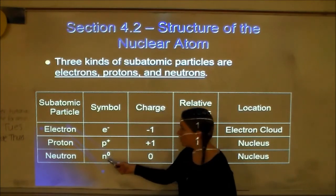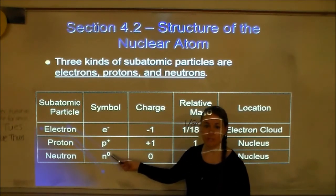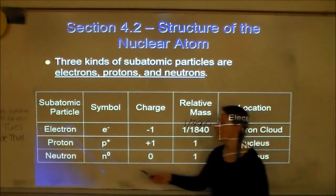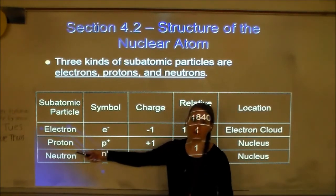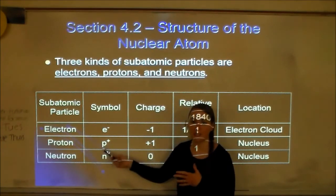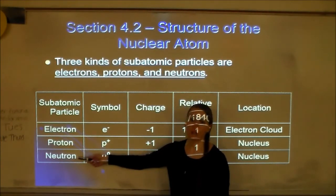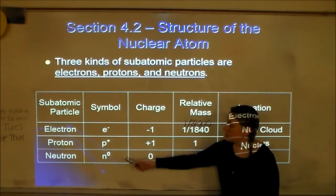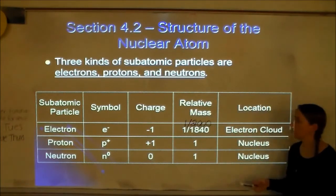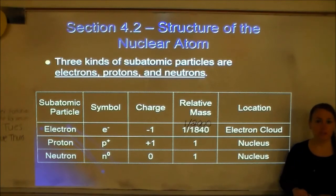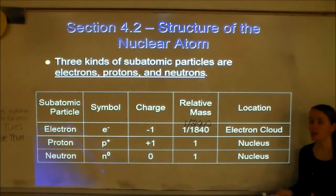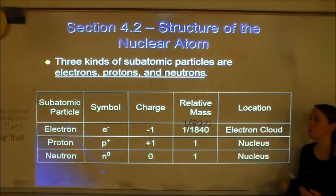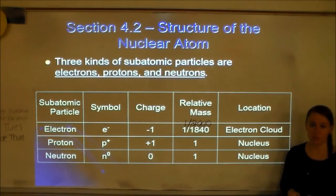The last subatomic particle is the neutron. The symbol is N with a little zero because the charge is zero. Neutron comes from the word 'neutral' — so it's N to the zero, charge of zero, relative mass of one, also located in the nucleus. So the proton and neutron are in the nucleus, and the electrons are around or outside the nucleus in the electron cloud.